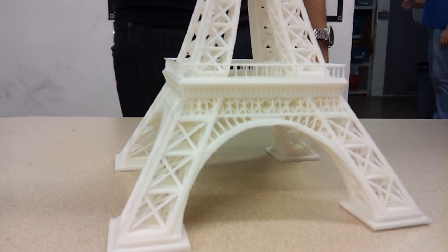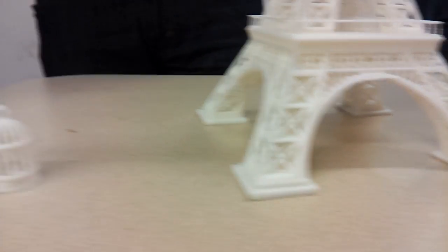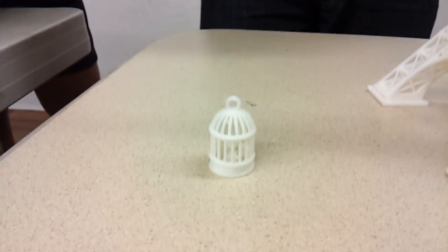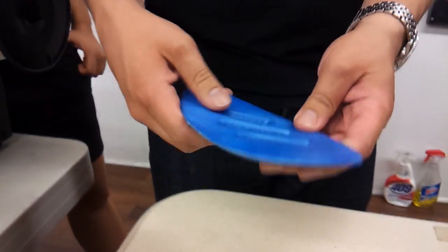Anyway, here, this is an example of why we need soluble support here, but this is what 50 microns looks like. Oh, this one? Yeah, okay.